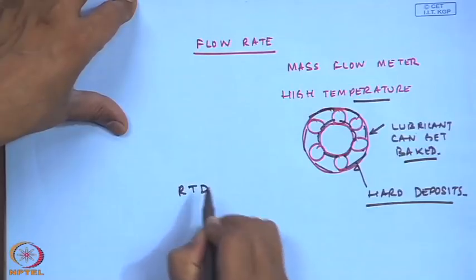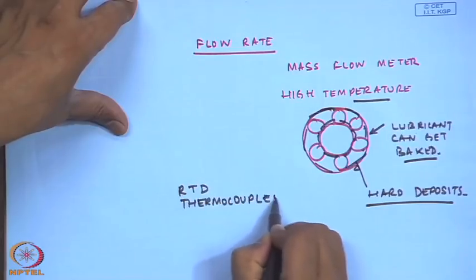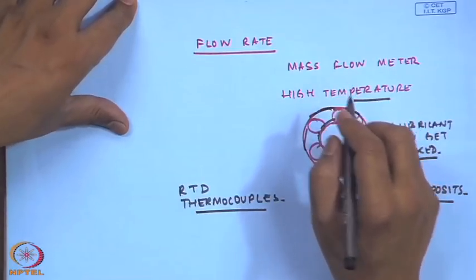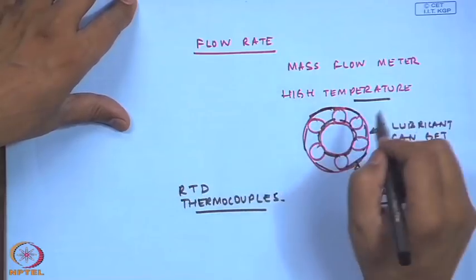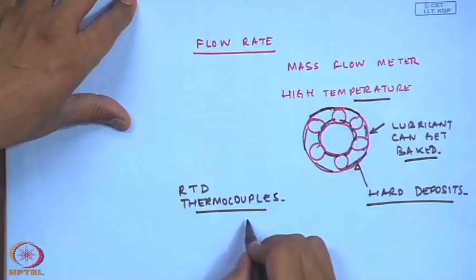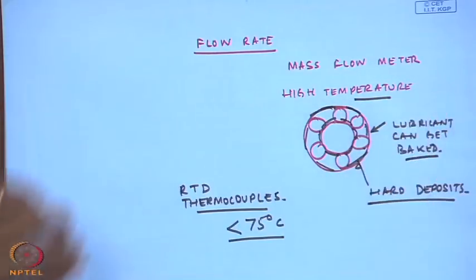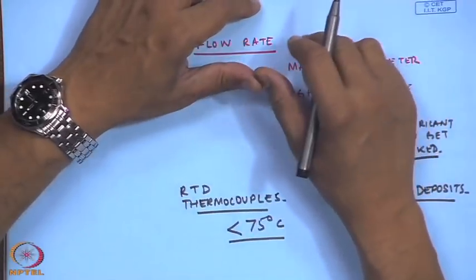Temperatures in compressors must always be monitored using RTDs (resistance temperature detectors) or permanently mounted thermocouples. In the machinery maintenance unit, bearing temperatures of compressors are regularly monitored. The recommended industry principle is to maintain bearing temperatures below 75 degrees Celsius. To maintain such a temperature, RTDs and thermocouples are installed around the bearings of fans, compressors, and blowers.